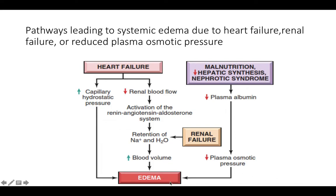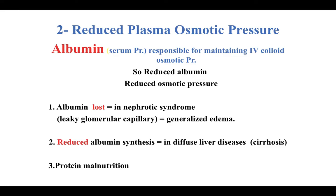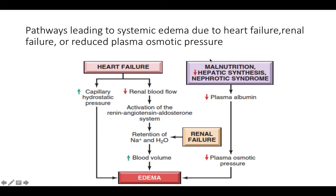Another cause of generalized edema is decreased plasma albumin. Edema can result from either increased capillary hydrostatic pressure or decreased plasma osmotic pressure. The plasma osmotic pressure decreases when albumin is reduced. Albumin is the most common serum protein responsible for maintaining intravascular colloid osmotic pressure. Causes of decreased albumin include malnutrition, decreased hepatic synthesis, and nephrotic syndrome — all leading to decreased plasma osmotic pressure and resulting in edema.